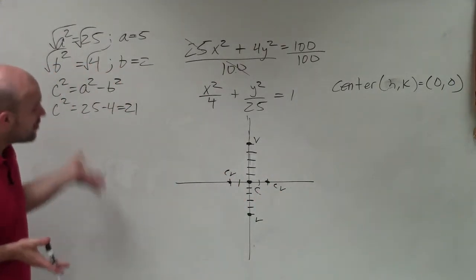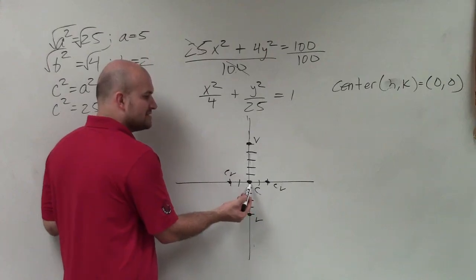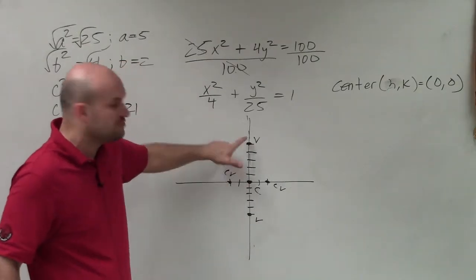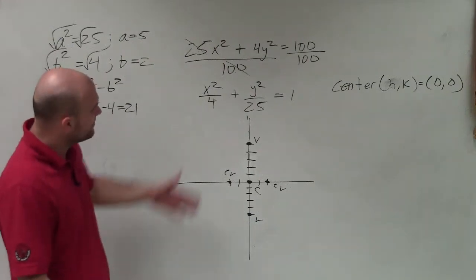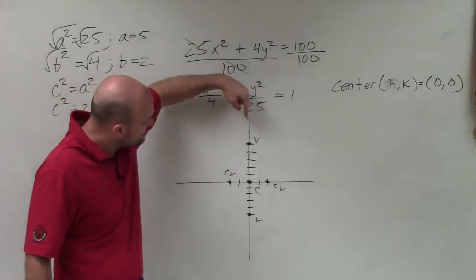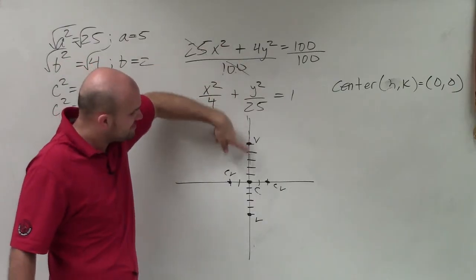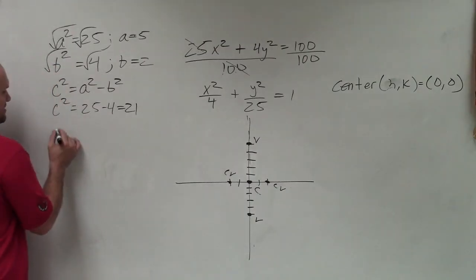Now, to identify what my foci are going to be, my foci are, again, going to be the distance from the center, or sorry, the value c from the center to both foci. However, you've got to make sure you remember they're going to lie on the same axis, which is the major axis, as my vertices. So therefore, whatever my value of c is, to solve that, c squared equals 21.